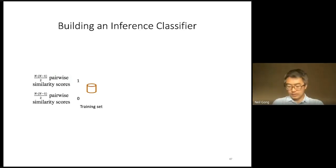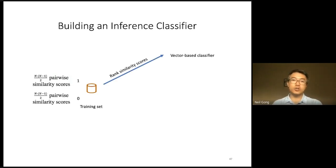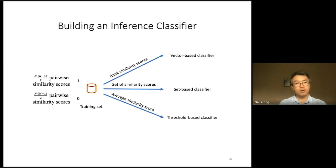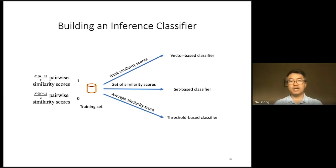Based on the training set, we build an inference classifier. Specifically, we consider three ways. The first way is to rank the pairwise similarity scores of each image in the training set and train a vector-based classifier. The second way is to directly treat the pairwise similarity scores of an image as a set and train a set-based classifier. The third way is to calculate the average of the pairwise similarity scores of each image and build a threshold-based classifier — a threshold-based classifier infers an image as a member if its average pairwise similarity score is larger than a threshold.